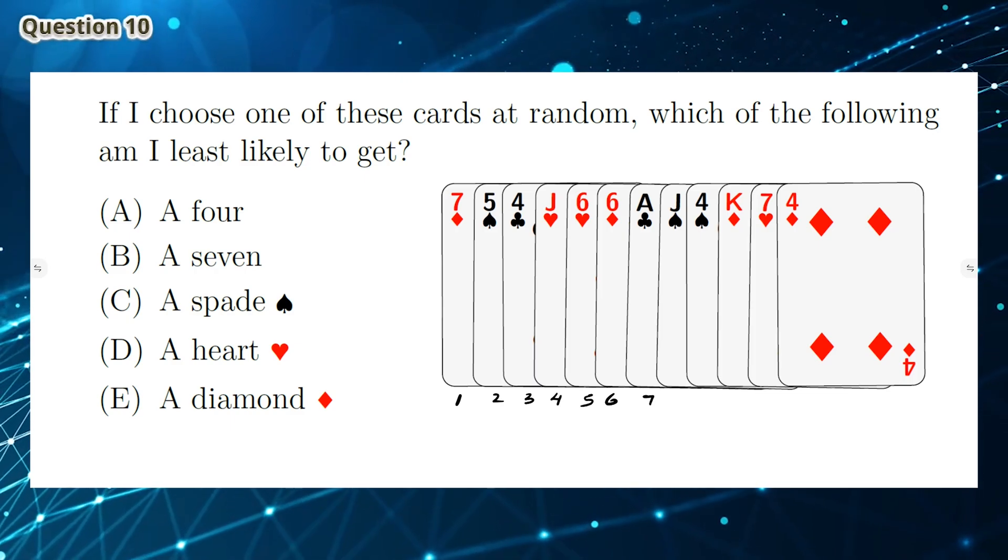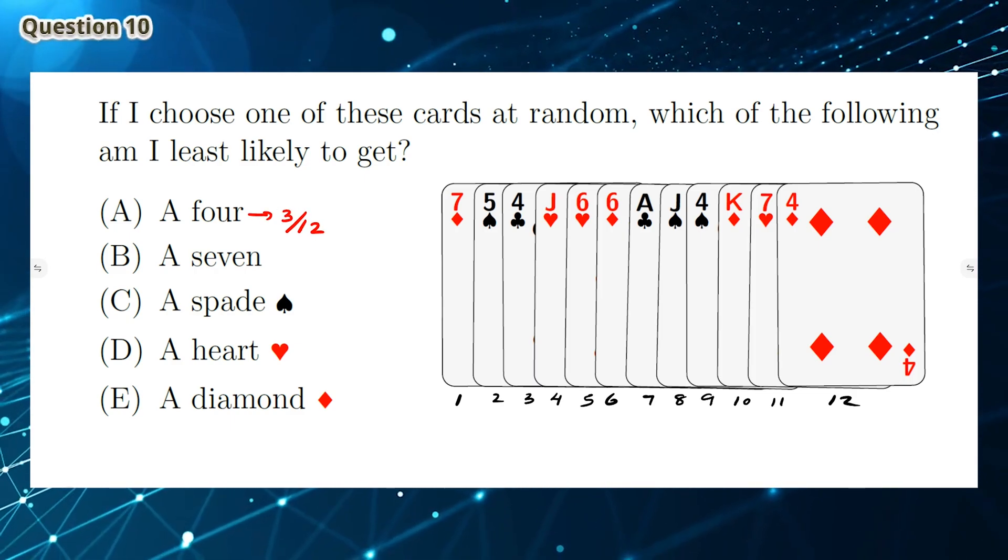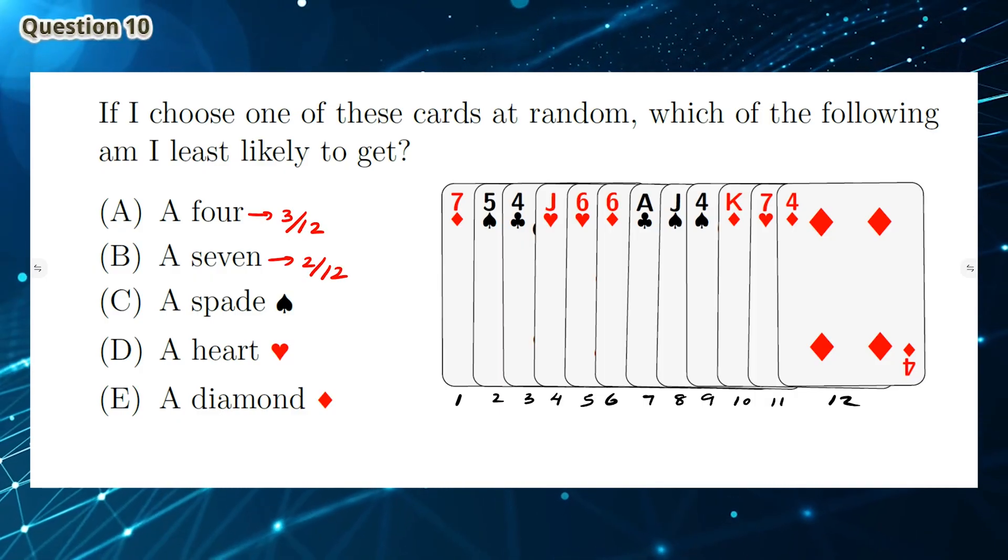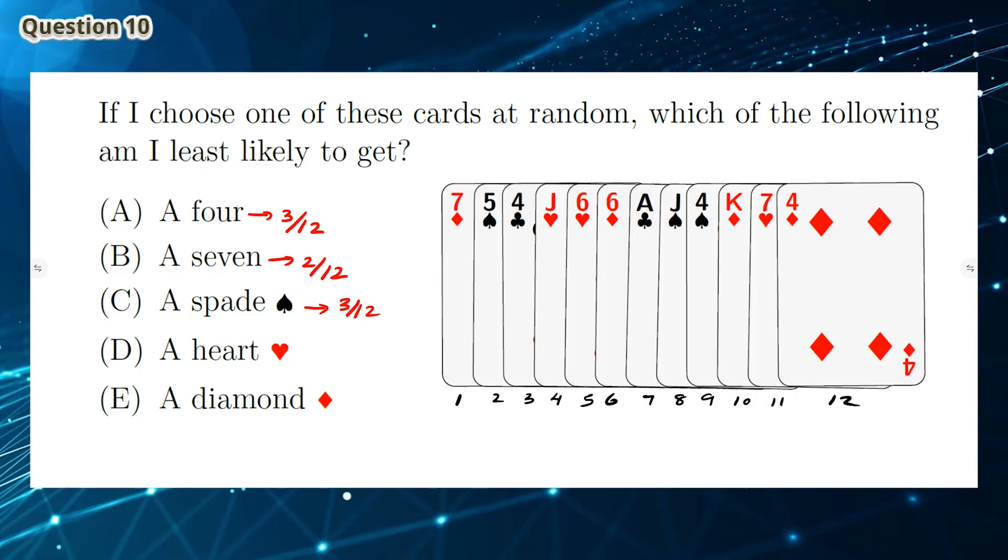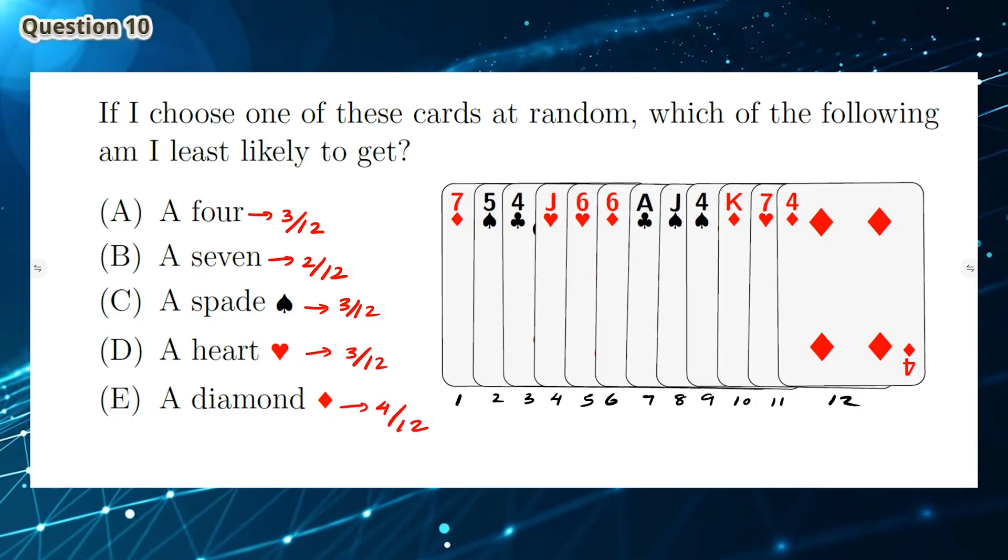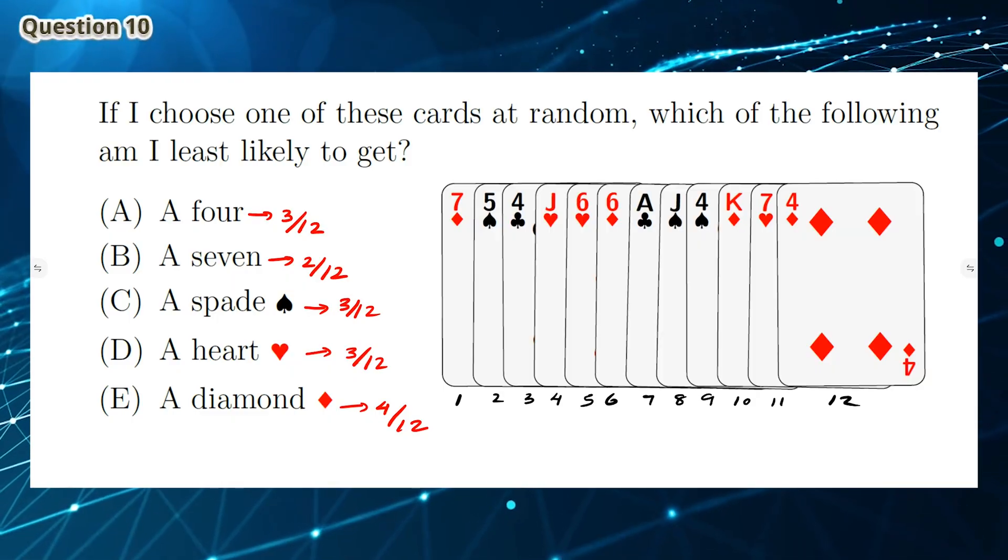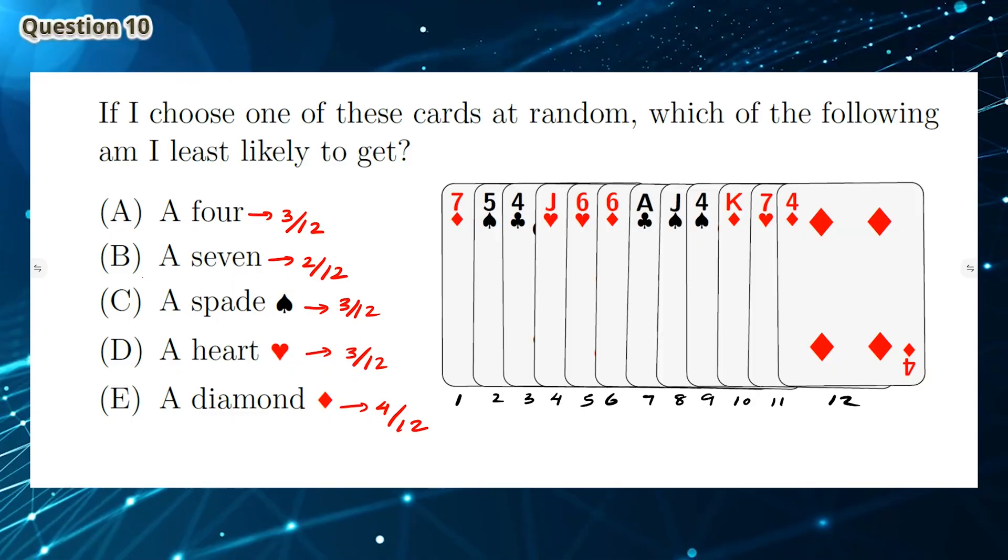Question 10: There are 12 cards altogether, so we can write the ratio out of 12 for each option. We need to find which option is the least likely. This is option B, a 7, which has a ratio of 2 out of 12. So the answer is B.